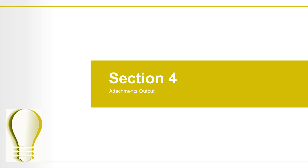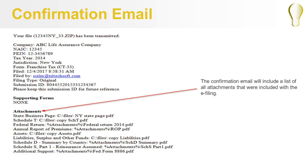After successfully submitting an eFiling, a record of the eFile attachments included can be found in the confirmation email and the attachment frame. Upon successful submission, a transmission confirmation email will be sent to the contact email address for the form. Where the address comes from varies by the return. This email will include a list of the attachments that were included with the eFile.